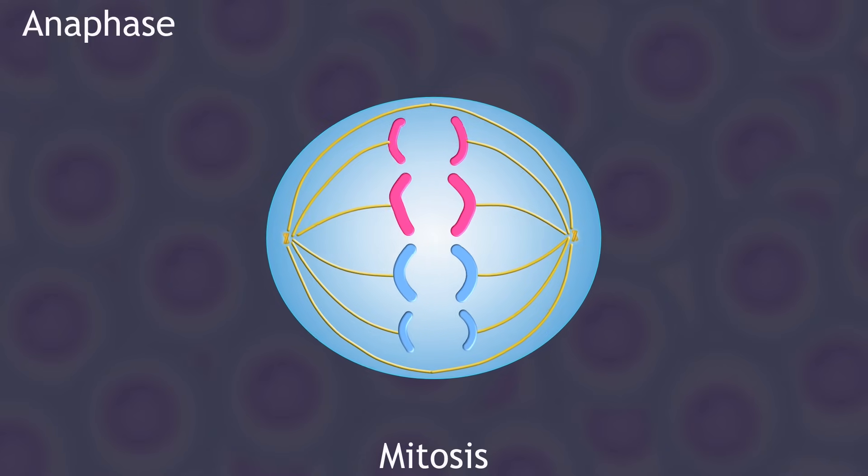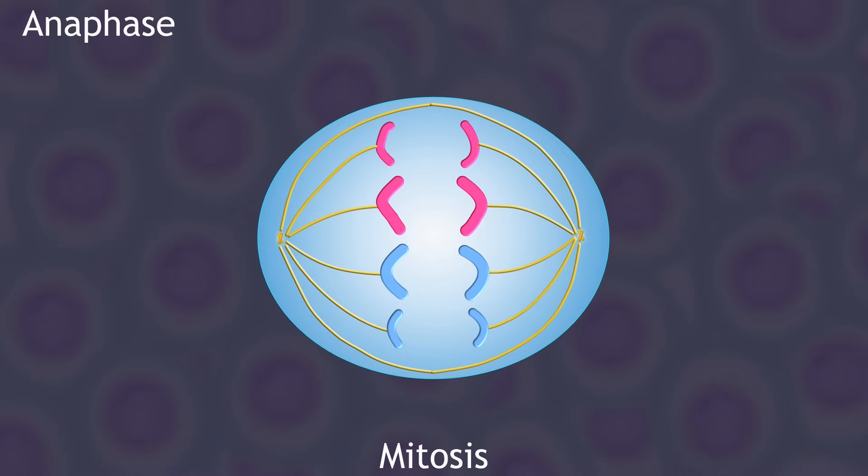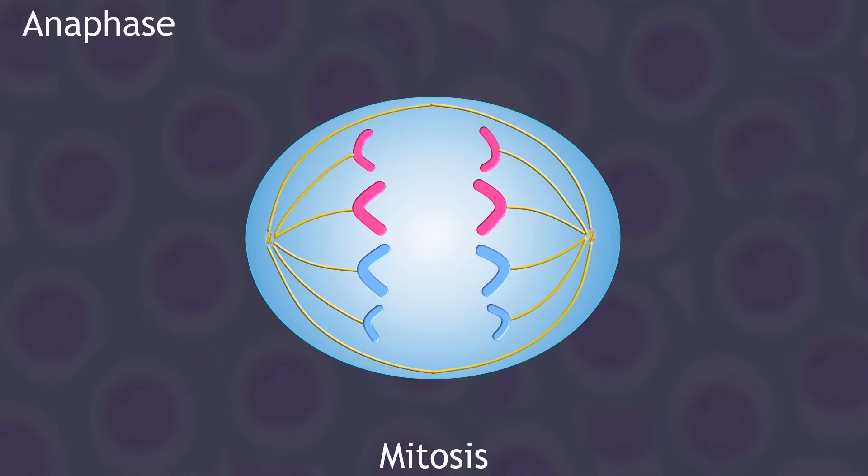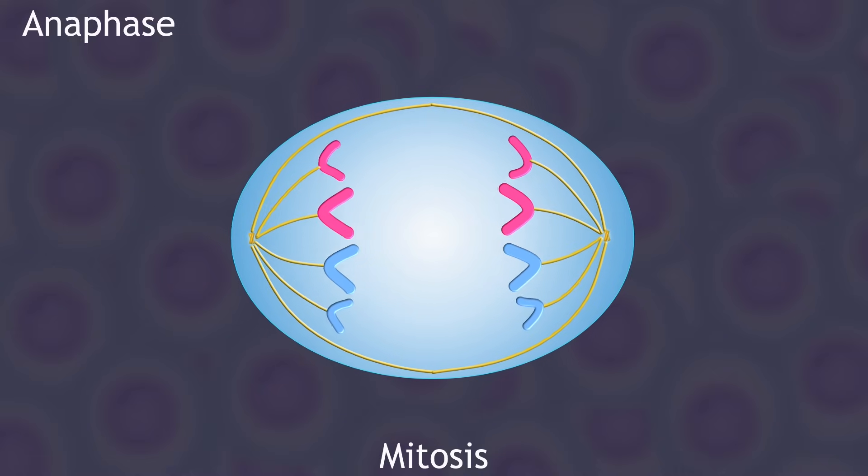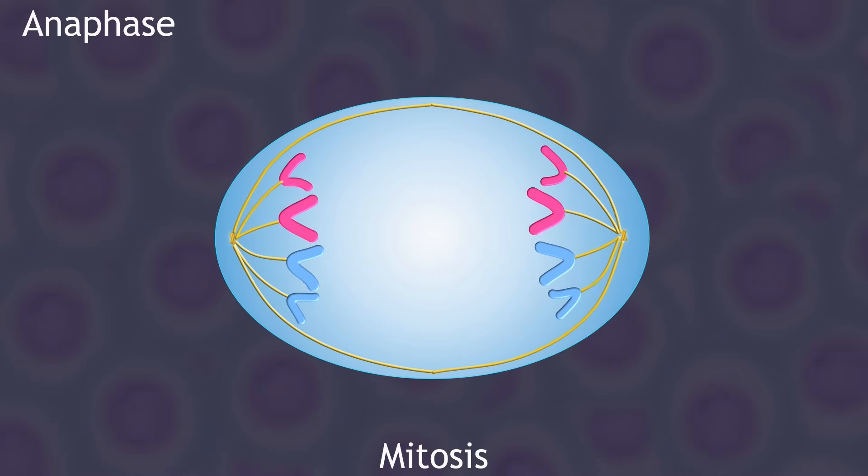During anaphase, sister chromatids are separated from one another and pulled to opposite ends of the cell.